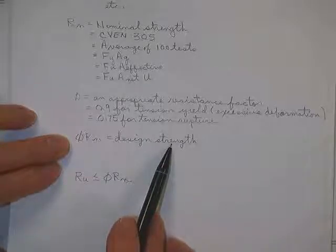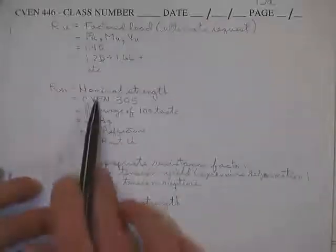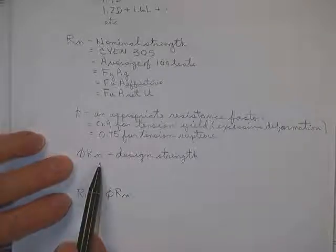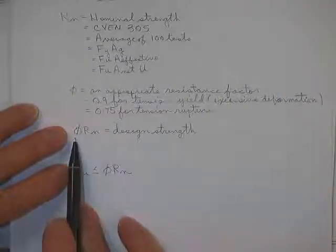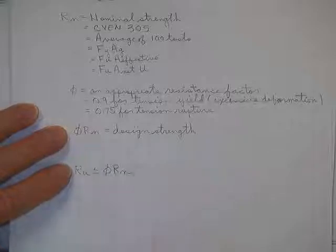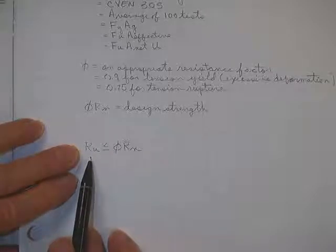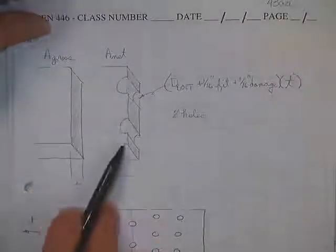Phi is an appropriate resistance factor, generally speaking. Phi R sub N is your design strength. So when the homework problem says find the design strength, this is what they're looking for. When they ask you for the nominal strength and you give them this, they count off because he wants you to know the difference. Your ultimate job is still this. Keep your requests, your ultimate request below your design strength.